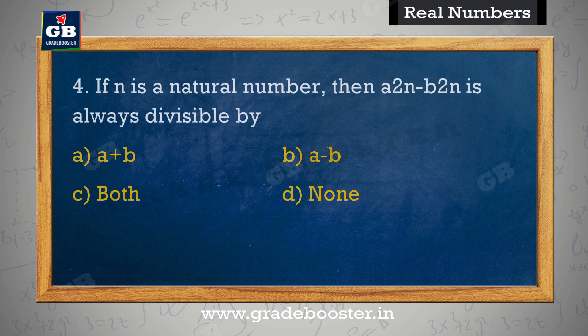If n is a natural number, then a²ⁿ minus b²ⁿ is always divisible by. Yadi n ek natural number hai, toh a²ⁿ minus b²ⁿ hamesha iske dwara vibhajit hoga. A. a+b, B. a-b, C. Both, D. None.